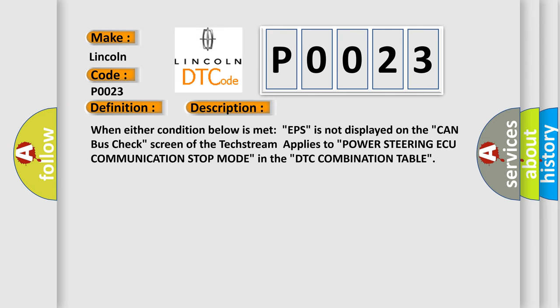When either condition below is met, EPS is not displayed on the CAN bus checked screen of the text stream. Applies to power steering AQ communication stop mode in the DTC combination table.